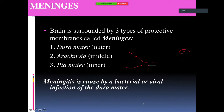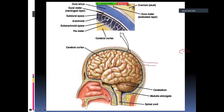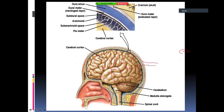In a cross-section you can see the outer dura mater, then the arachnoid in the middle, and the pia mater on the inside. Normally, bacteria and viruses shouldn't be able to get past these meningeal layers. When they do, it's a serious problem.